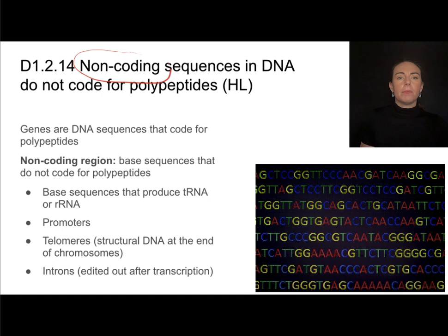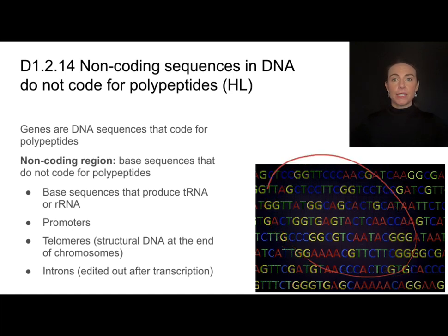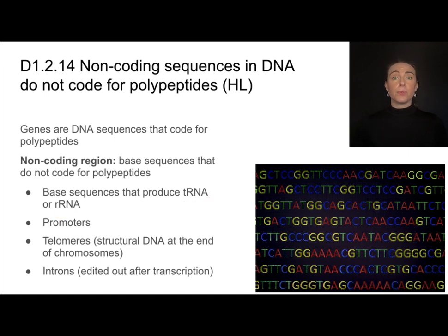The promoter is also a great example of a non-coding region. Non-coding means that it does not code for a polypeptide and therefore is not a gene. Genes code for polypeptides. We have lots of base sequences — in fact, most of our base sequences in our genome are not genes. They are non-coding regions, base sequences that code for something else.